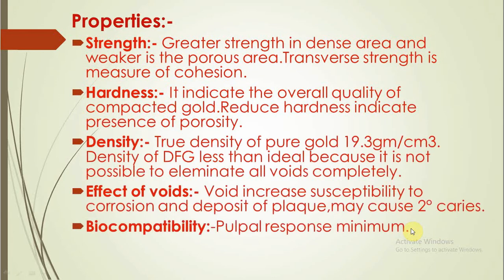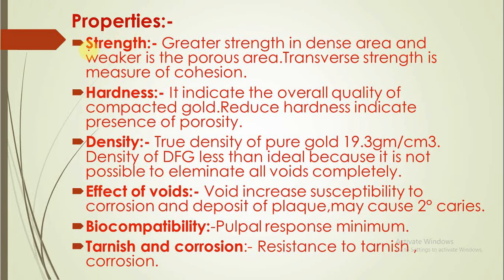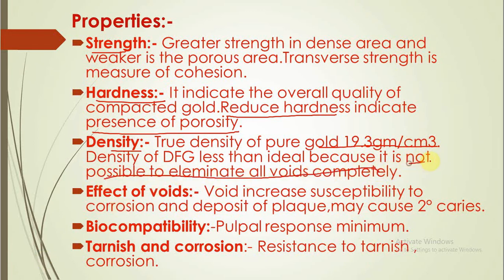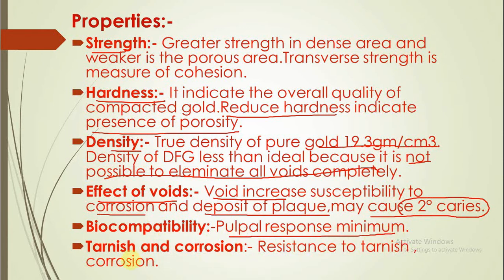Properties: Strength — it is greater in the dense area and weaker in the porous zone. Hardness — it indicates the overall quality of compacted gold; there will be reduced hardness if there are porosities. Density will be less than that of pure gold, i.e., less than 19.3 g/cm³, because it is practically impossible to eliminate all voids completely. Effect of voids: if there are more voids, there are more chances of plaque accumulation, more chances of secondary caries; pulp response is minimal, and it is resistant to tarnish and corrosion.